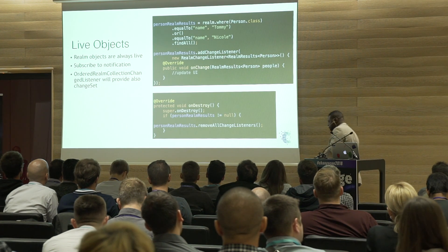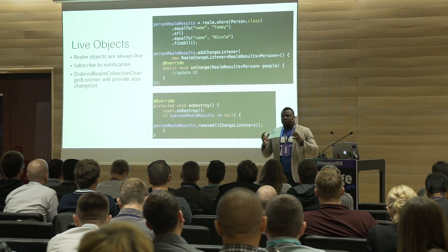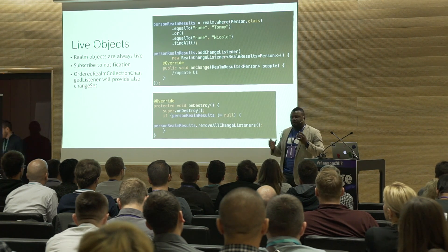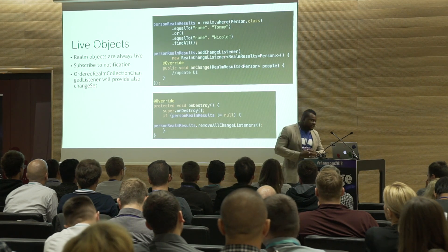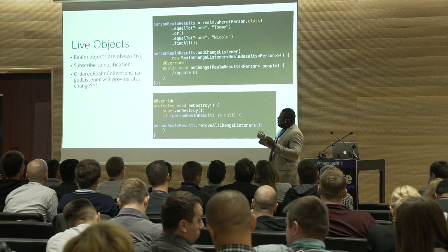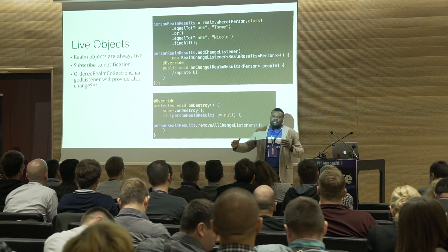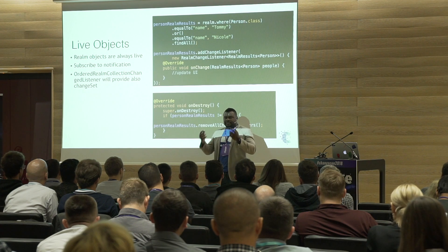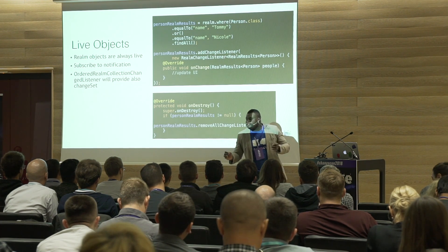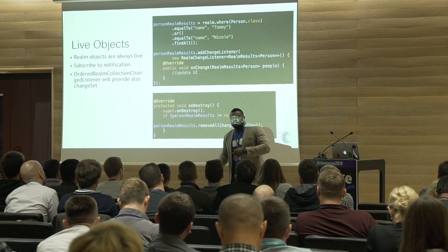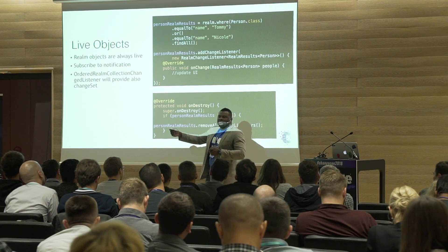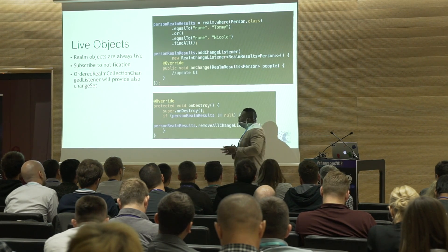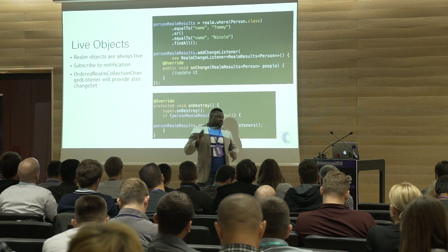Live objects. Realm objects are live across your application. In any thread, you always have the latest update of your objects. You can also register a listener on a Realm object, and anywhere across your app — regardless of thread — if there is a change on that data related to the query you performed, you will get notified. So Realm gives you a reactive approach for free. You just react to changes; you don't have to poll your database every 5 seconds or send events between screens.